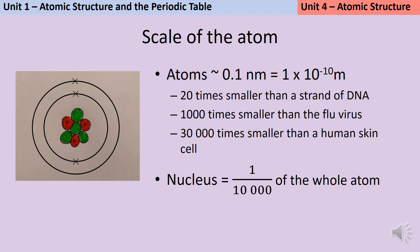A hydrogen atom has a radius of about 0.1 nanometers, which can also be expressed as 1 times 10 to the minus 10 meters. That's 20 times smaller than a strand of DNA, a thousand times smaller than a flu virus, 30,000 times smaller than your cells. So we're talking really really tiny here.